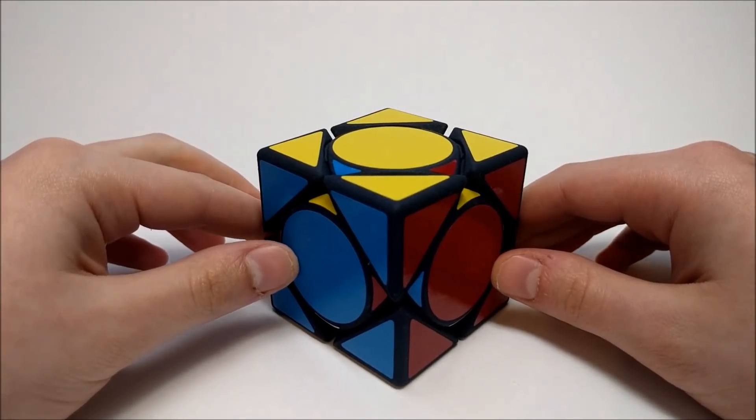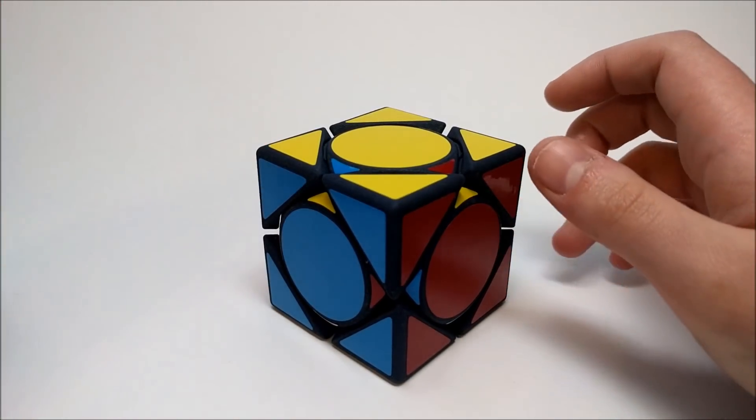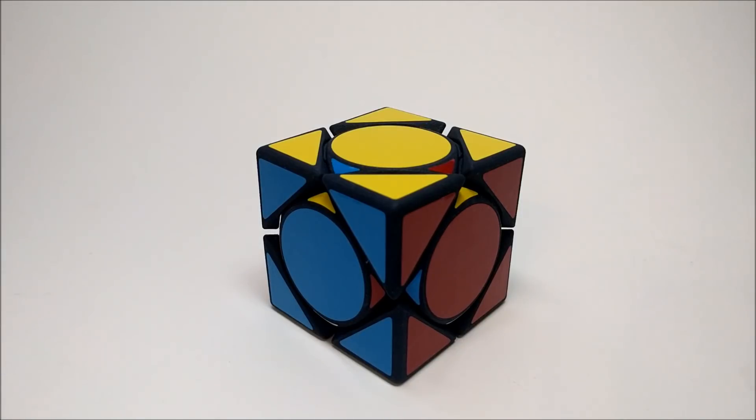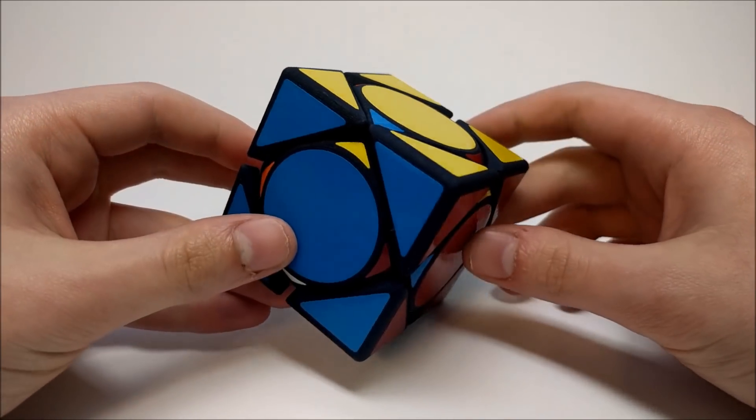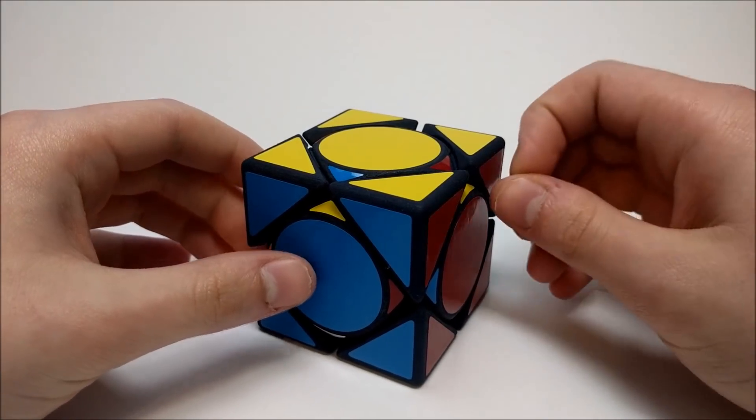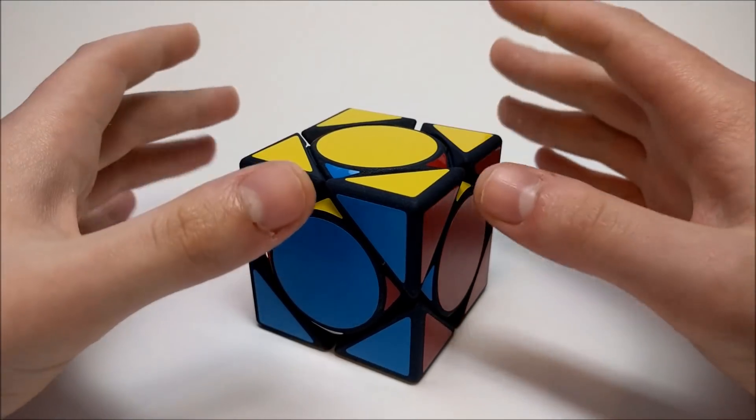This is my weird Skewb. It's called the weird Skewb after Matt's weird 5x5 and weird 11x11, and I take weird to mean that it's a puzzle that has moves that look like they shouldn't be possible, but they are possible.